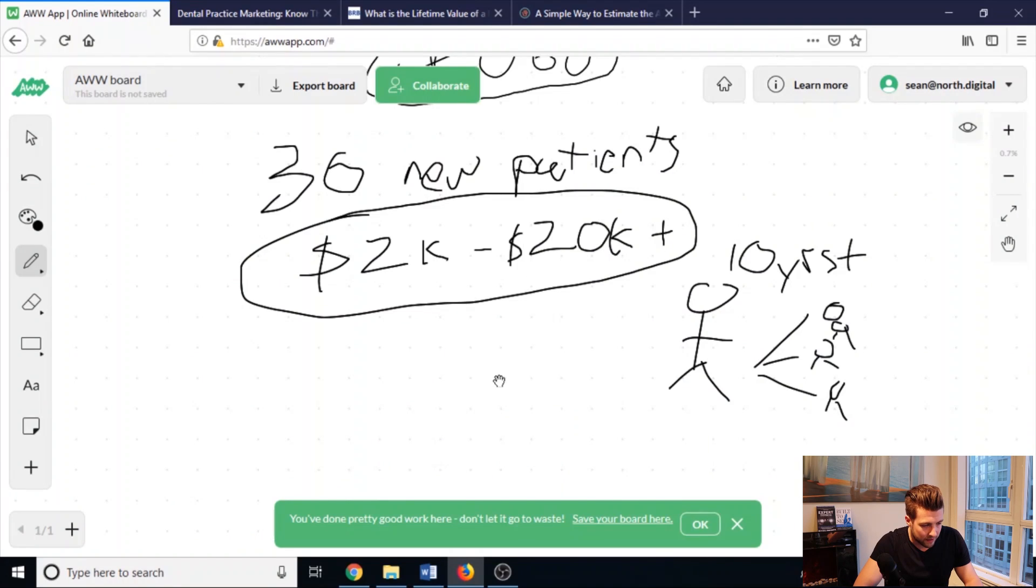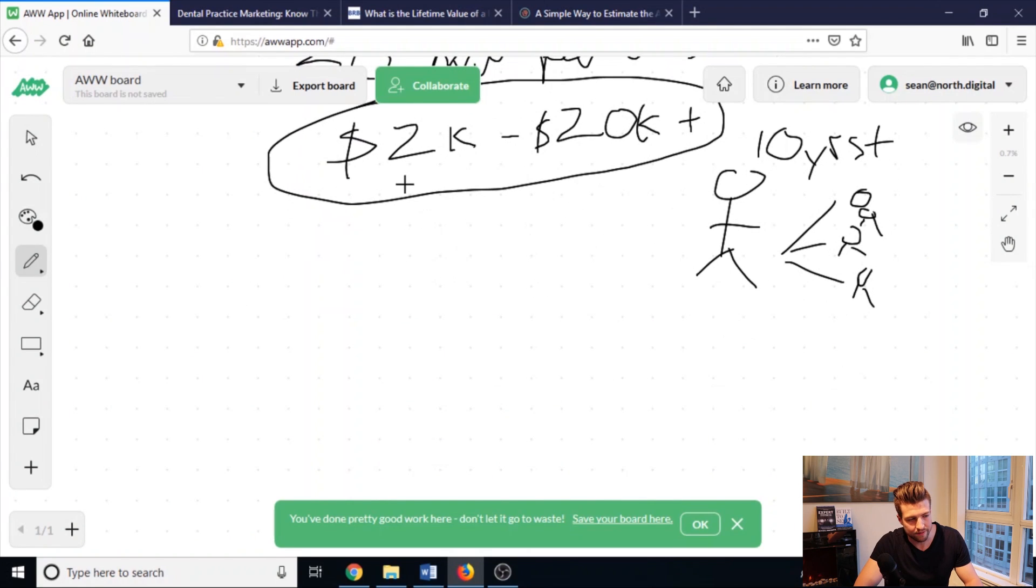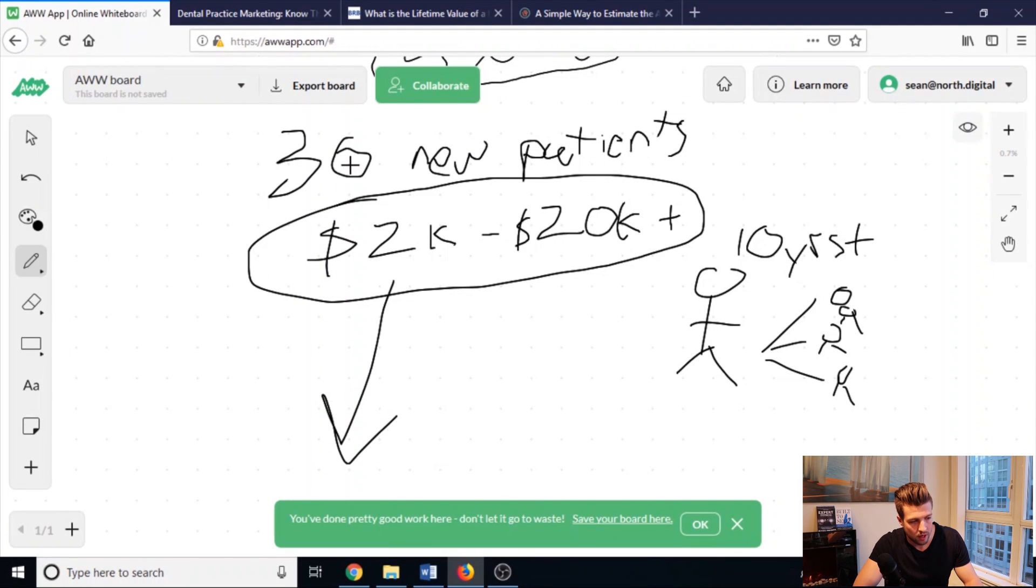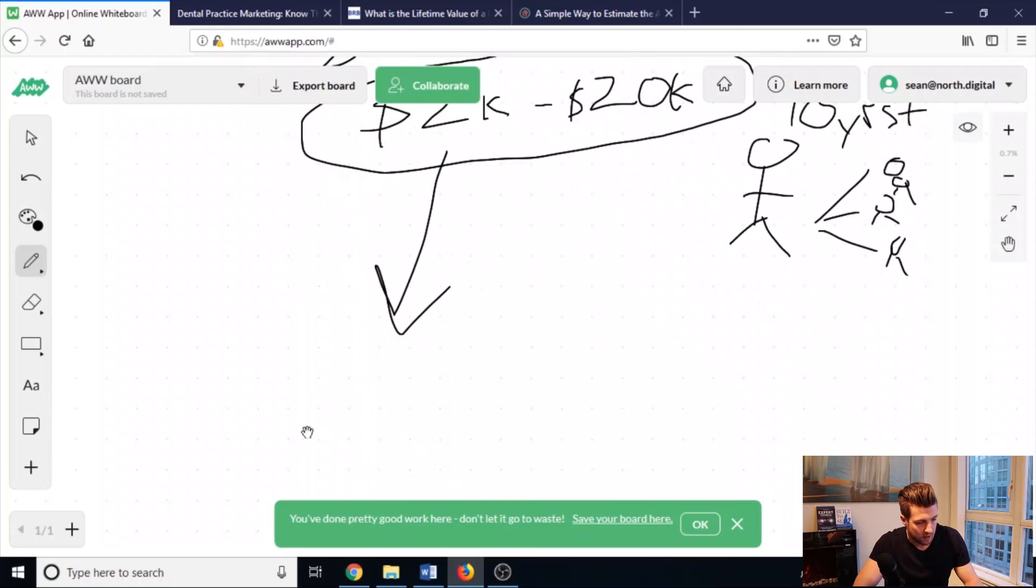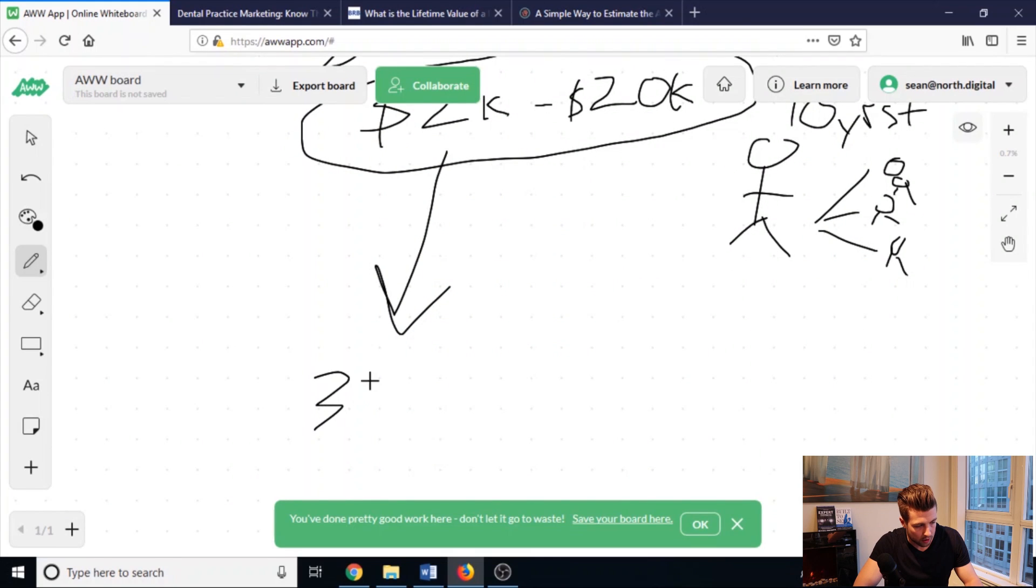So, even if we assume that the true lifetime value is $2,000, and people have different opinions of this, at $2,000 value generated per new patient. So, the amount of value that we're generating our dental client every month is 30 new patients times $2,000 lifetime value per patient. So, this is $60,000.